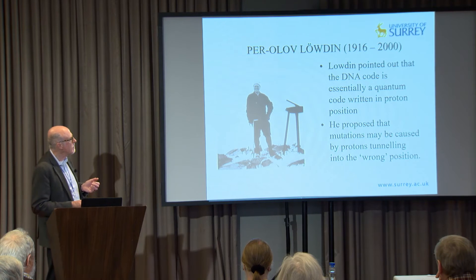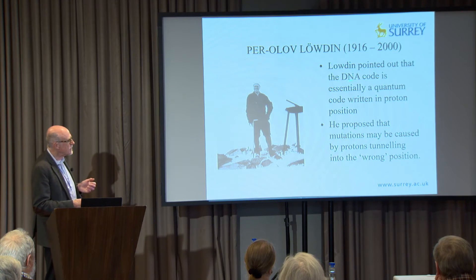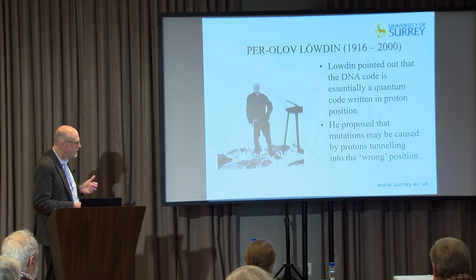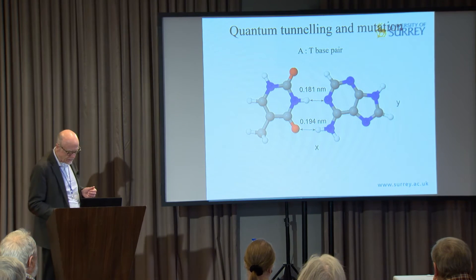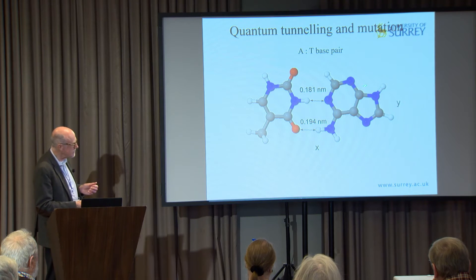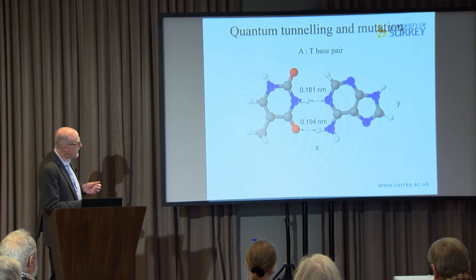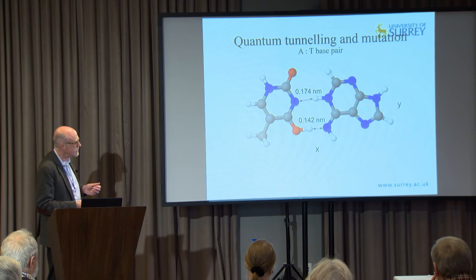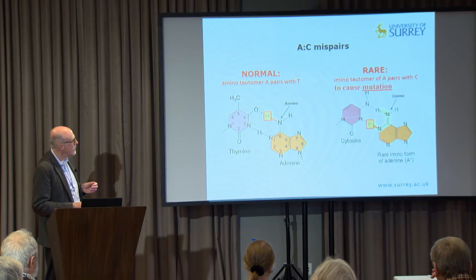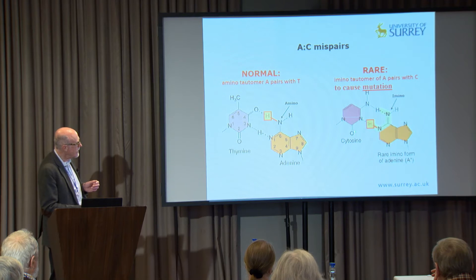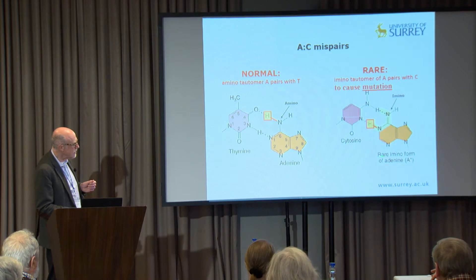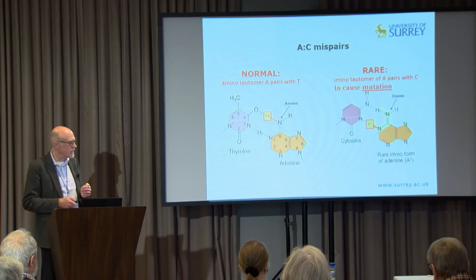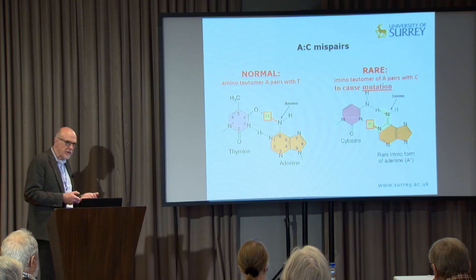This was first pointed out by another physicist, Per-Olov Löwdin, who noted that the DNA code is essentially a quantum code written in proton positions, and that mutations may take place through proton tunneling. In a normal Watson-Crick base pair, if a proton attached to one atom pops over, you get the tautomeric form of the base. If adenine is in its rare tautomeric amino form it can pair with cytosine rather than thymine and cause a mutation. Löwdin proposed that proton tunneling may be a cause of mutation.